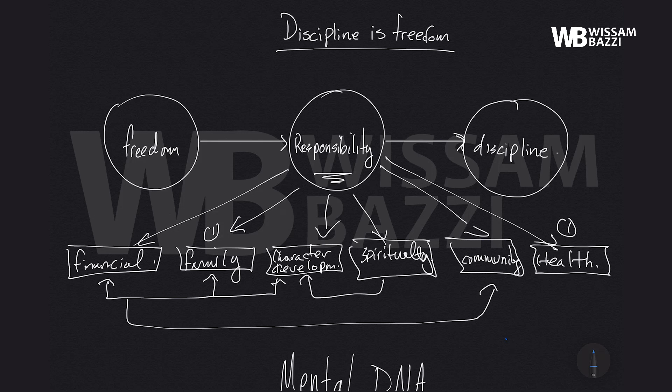Welcome back to the third part of this series. What we've talked about so far is freedom — when someone hands you freedom, they hand you responsibility, and if they hand you responsibility, it requires discipline. Then we went into how responsibility is categorized into six different categories: financial, family, character development, spirituality, community, and health. Today, I want to show you how to build mental DNA and how that works.